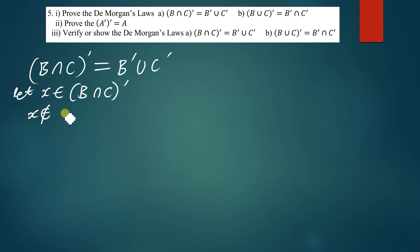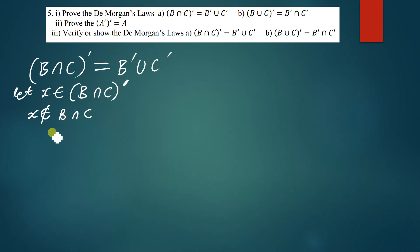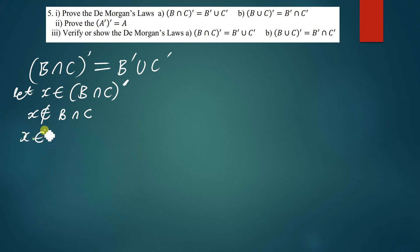So if x is a member of (B∩C)ᶜ, it means that x is not a member of B∩C, because when we talk about the complement of any set we are simply talking about the elements that are not present in that set. So when we say x is a member of (B∩C)ᶜ, we are simply saying x is not a member of B∩C. This implies that x is not a member of B and x is also not a member of C.